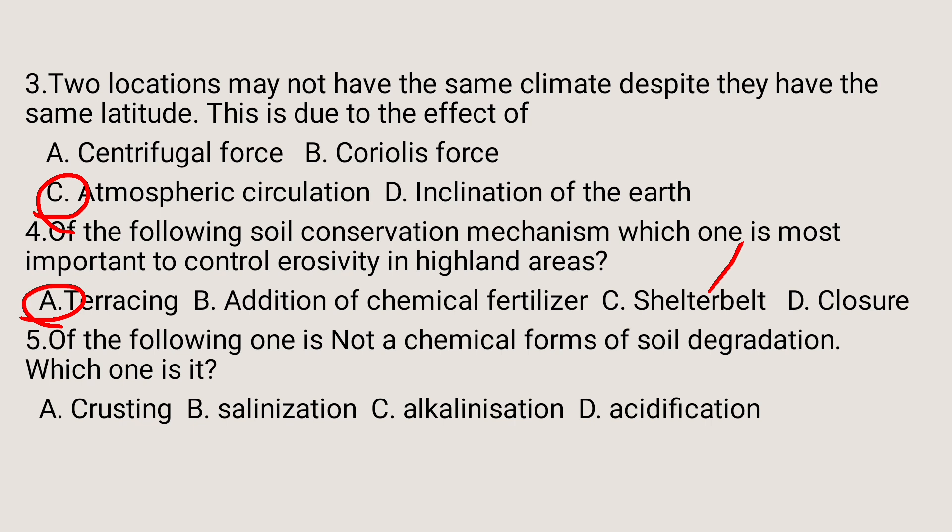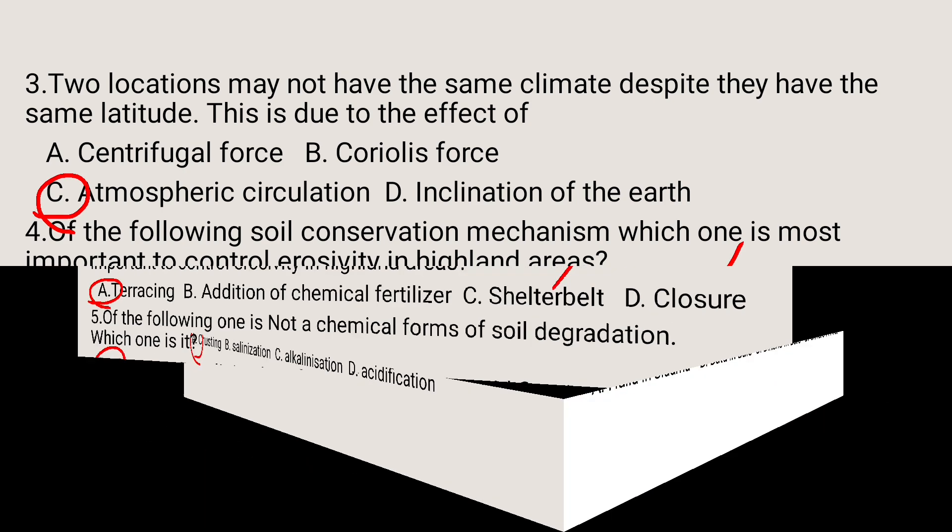Question number five: of the following, which one is not a chemical form of soil degradation? A: crusting, B: salinization, C: alkalinization, D: acidification. Crusting is not a chemical form of soil degradation — so A is the answer.